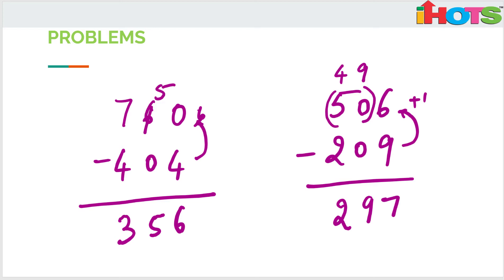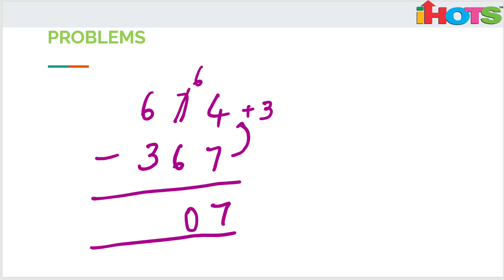You will get this question students, so you can practice more questions on your own. Next question: 674 minus 367. So 4 minus 7, yes 4 is less than 7, so add 3, that will be 7. This will be 6. 6 minus 6 is 0, 6 minus 3 is 3.